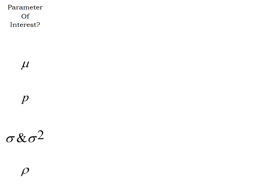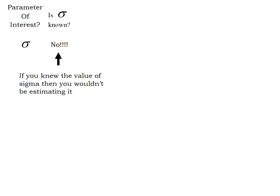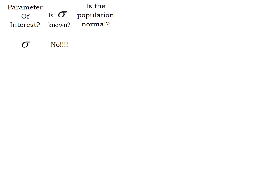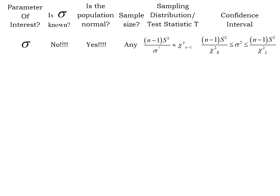Our parameter of interest this time is sigma. On our formula sheet we're after sigma. We go through our questions — obviously we don't know sigma, if we knew sigma we would not be trying to estimate it right now. The next question is: is the population normally distributed? Here the answer is yes. Our sampling distribution: n minus 1 times s squared over sigma squared yields a chi-squared score. That is our foundation for what we're going to do.